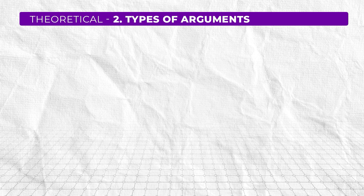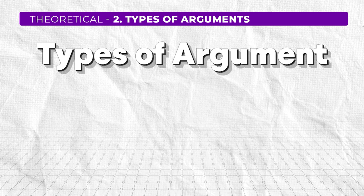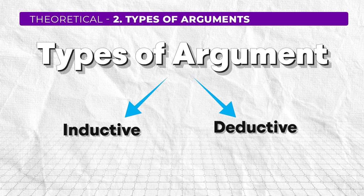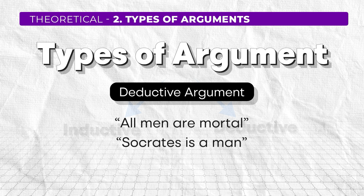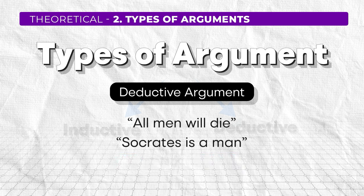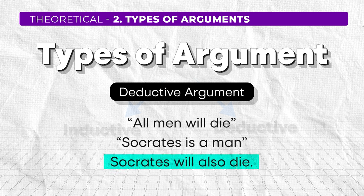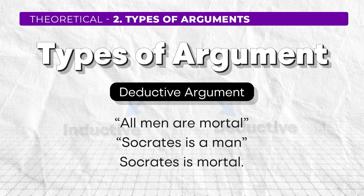The second important topic for UGC Net Paper 1 is types of argument. If we divide arguments, we have two major kinds: inductive argument and deductive argument. Deductive argument moves from general to specific. For example, all men are mortal — every man will die — and Socrates is a man, therefore Socrates is mortal. So from two general statements we deduce a specific conclusion. You are moving from general to specific.